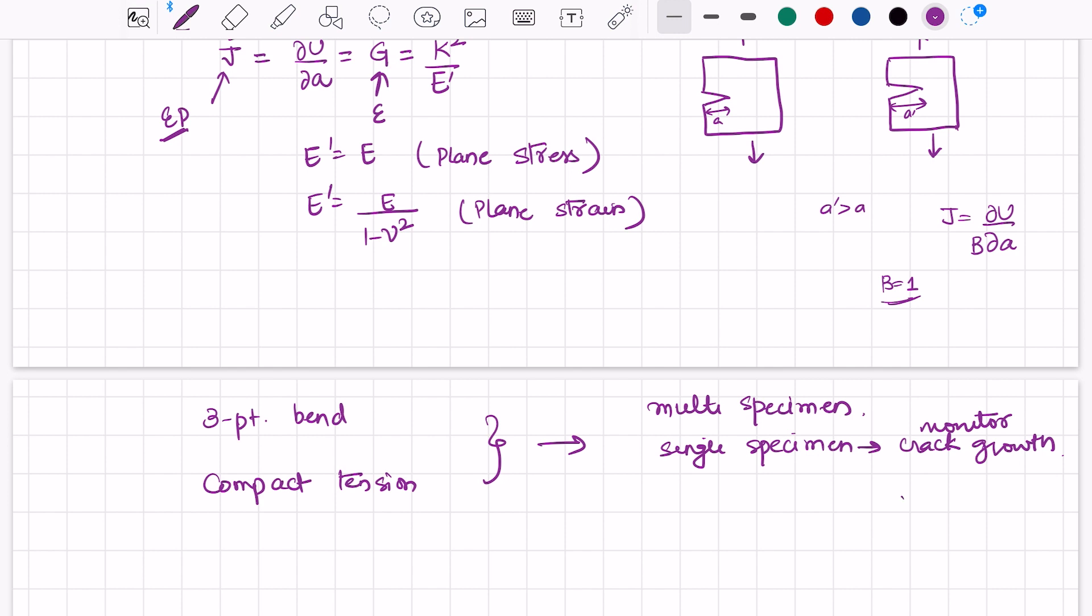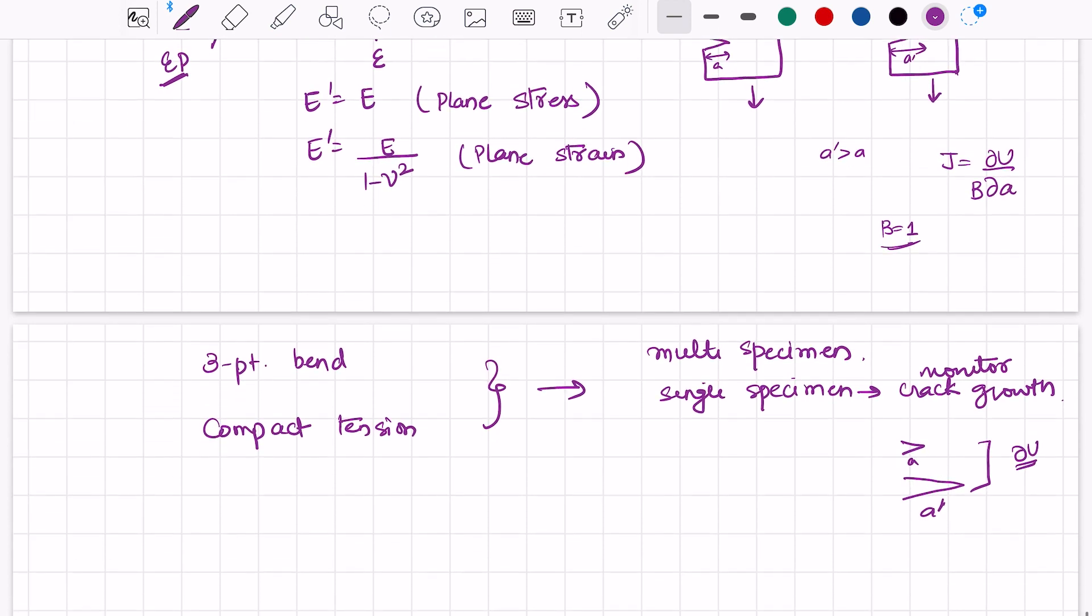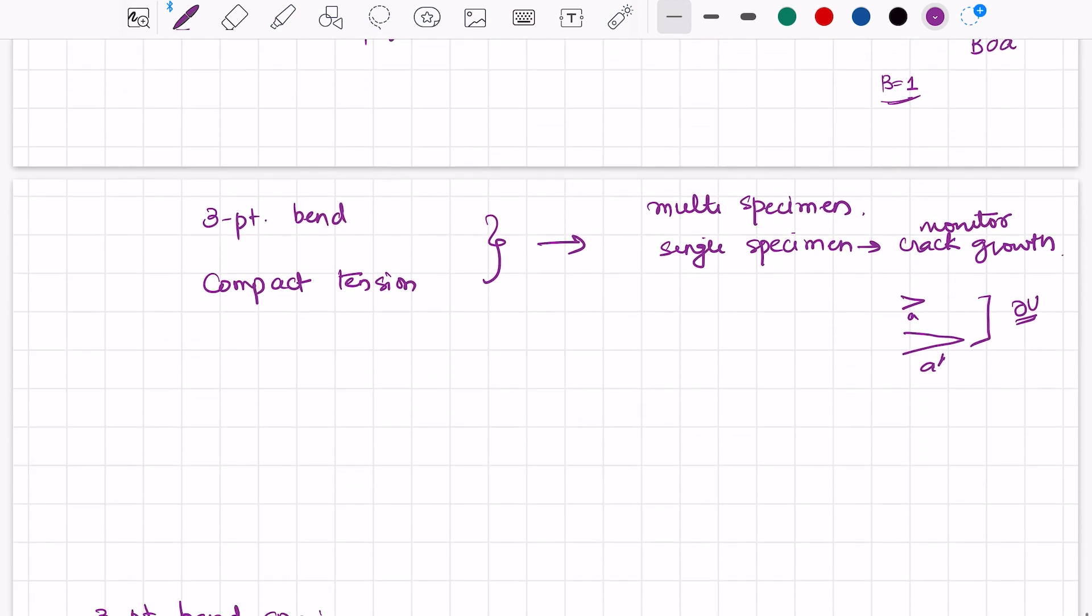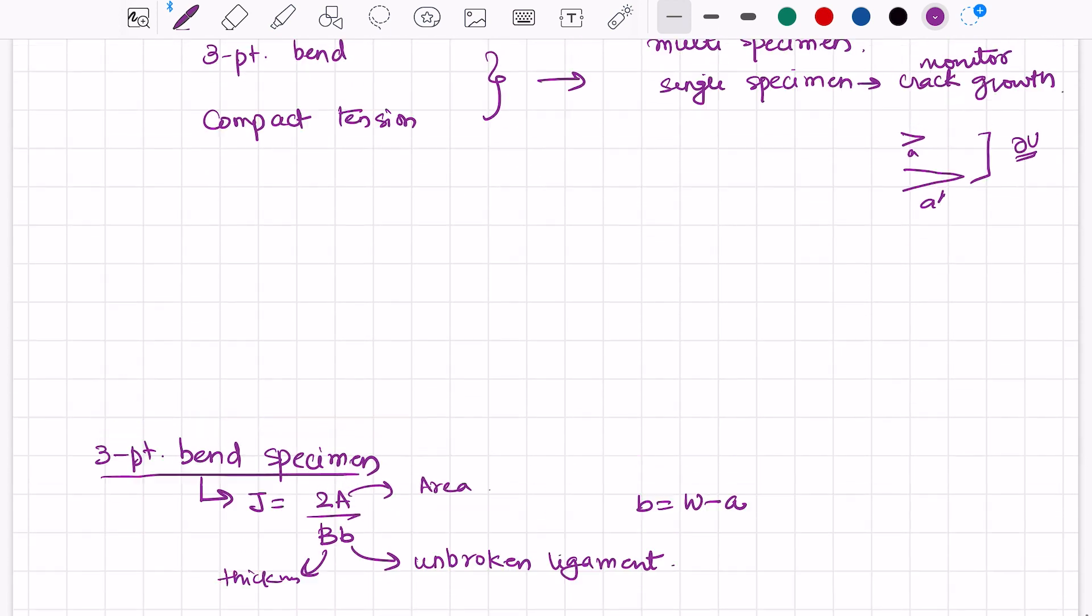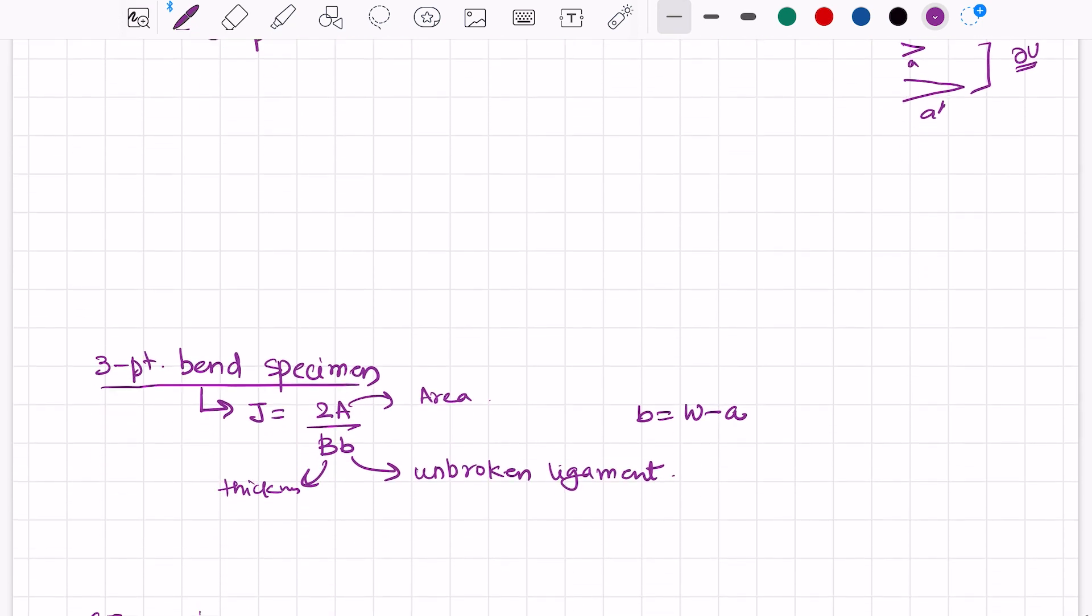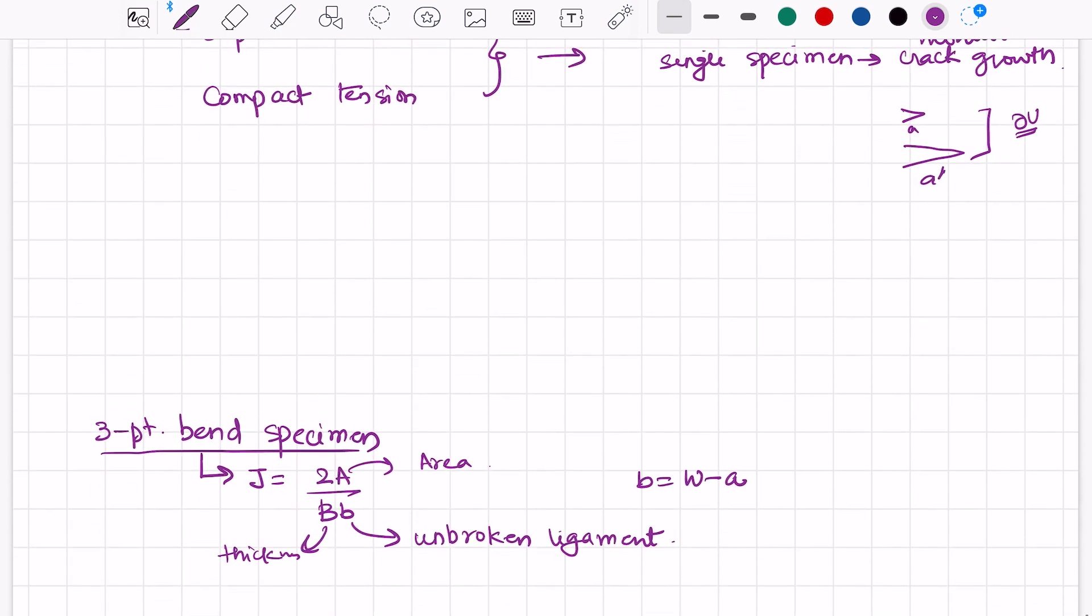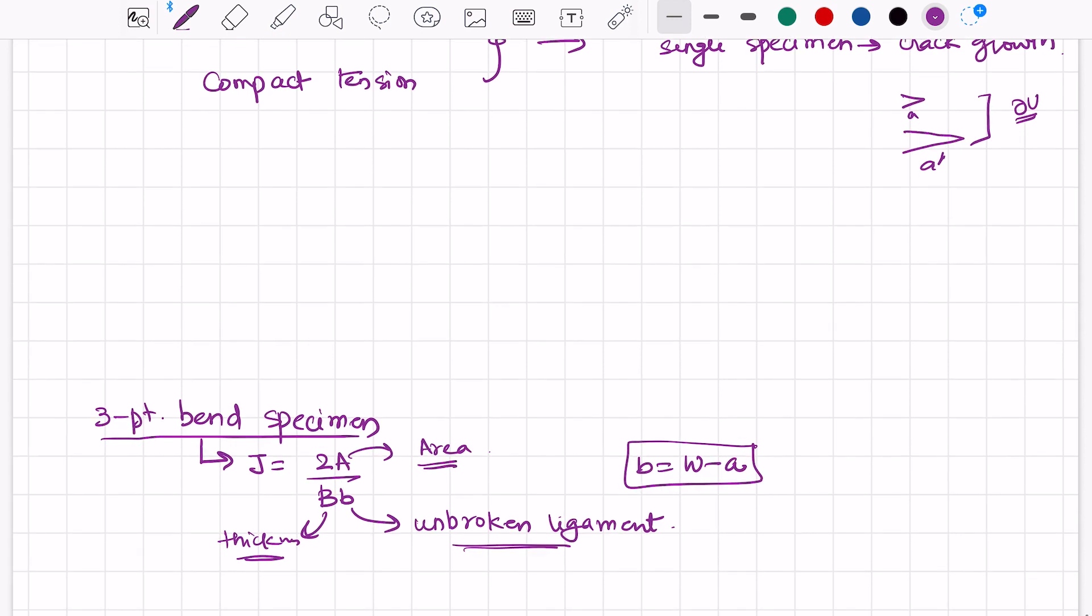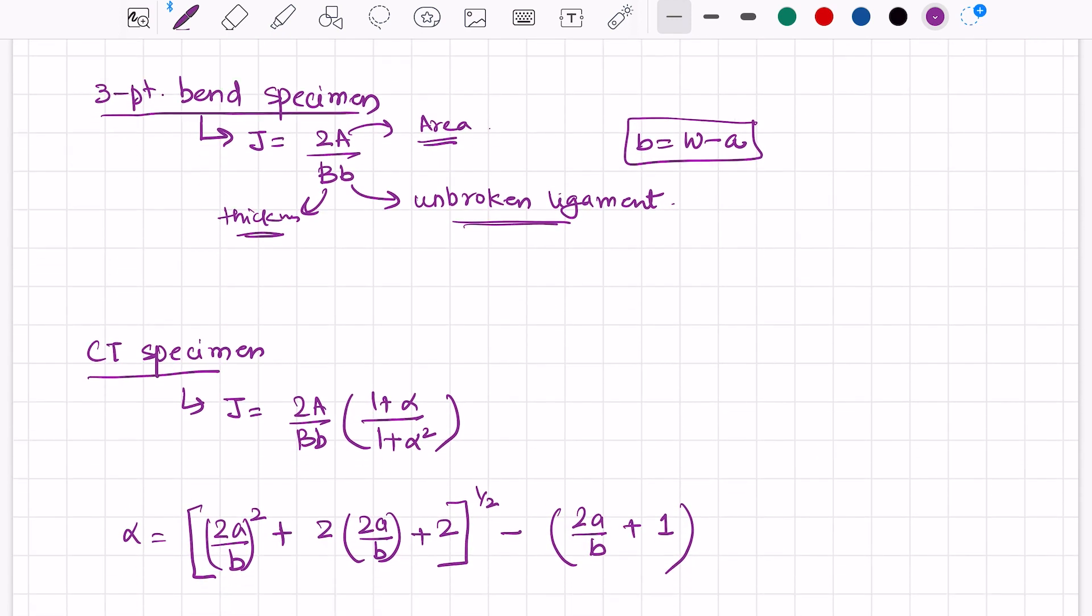When a increases to a-dash, what is the potential energy difference between the two? That is the J-integral. We can determine the value of J-integral for three-point bend specimen. We can write it as 2A by B times b. Here, A is the area, B is the thickness of the specimen, and small b is the unbroken ligament, which is width minus crack length.